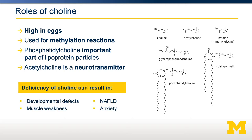For example, developmental defects can be traced back to the lack of methyl donors. Muscle weakness and anxiety is thought to be tracked back to the loss of acetylcholine. Fatty liver disease can be tracked back to the idea that you need phosphatidylcholine to transport lipids out of the liver to the rest of the body. If you don't have phosphatidylcholine, you are unable to package those lipids and they stay in the liver, resulting in non-alcoholic fatty liver disease.